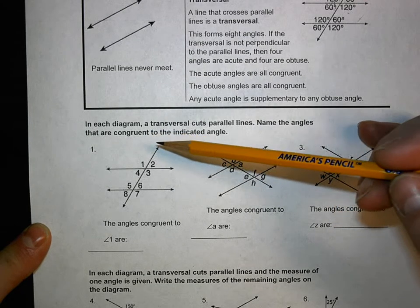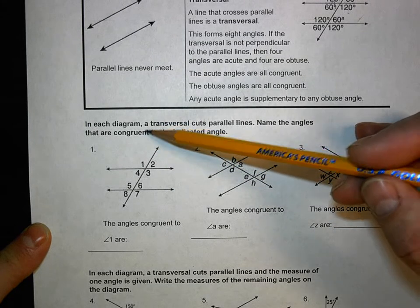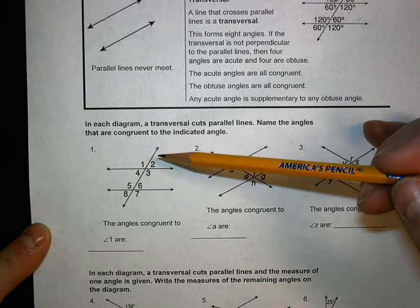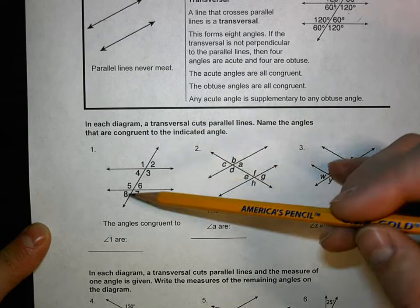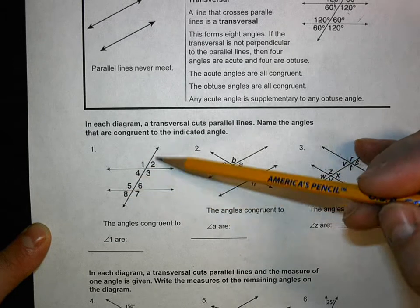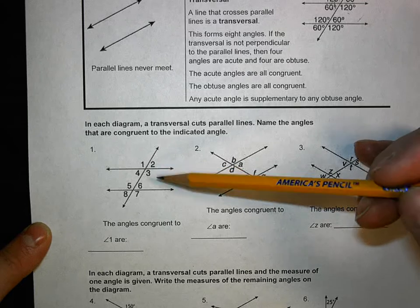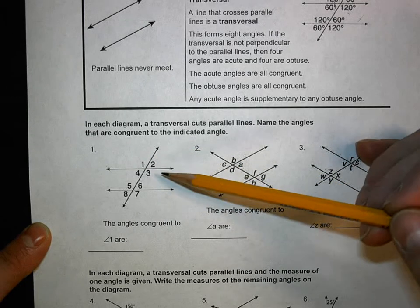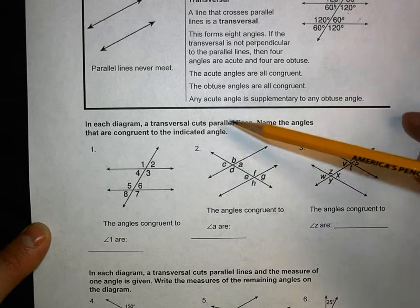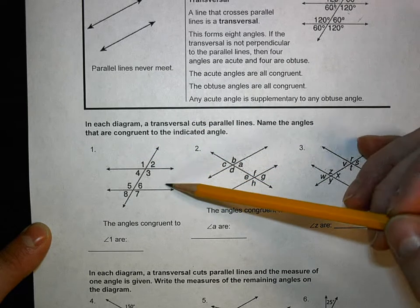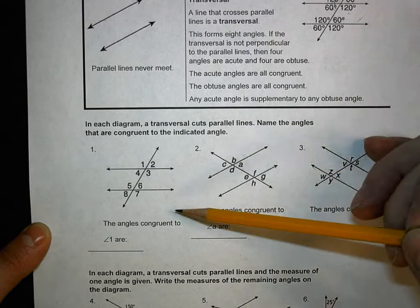So we talked about parallel lines that are cut by a transversal. There'll be two angle measurements. And since two parallel lines cut by a transversal makes eight angles, four will be one measurement, and four will be the other measurement. So if it wants angles that are congruent, and it gives me one angle, there's going to be three other angles that are congruent or the same.